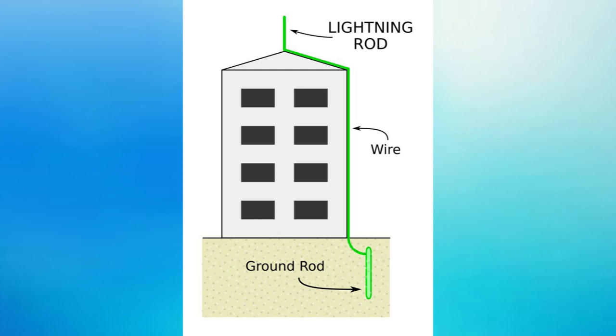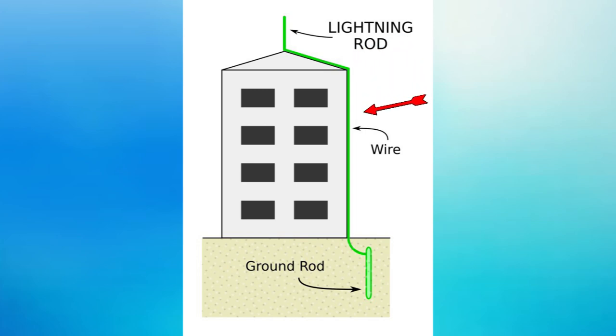A lightning conductor is a device used to protect buildings from the effect of lightning. A metallic rod taller than the building is installed in the wall of the building during its construction. One end of the rod is kept out in the air and the other is buried deep in the ground. The rod provides an easy route for the transfer of electric charge to the ground. The metal columns used during construction, electrical wires, and water pipes in the buildings also protect us to an extent, but do not touch them during thunderstorms. That is all about lightning and its safety measures.